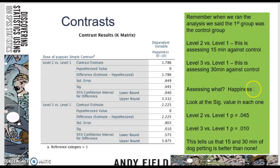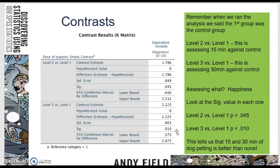We're assessing happiness — the mean of happiness. So in this table, the important variable to look at is significance right here. Level 2 versus level 1 is significant, and level 3 versus level 1 is also significant, because they are both less than .05. So this is telling us that 15 minutes compared to the control group is significant, and 30 minutes compared to the control group is also significant. In other words, 15 and 30 minutes of dog petting is going to improve your happiness relative to not petting the dog.